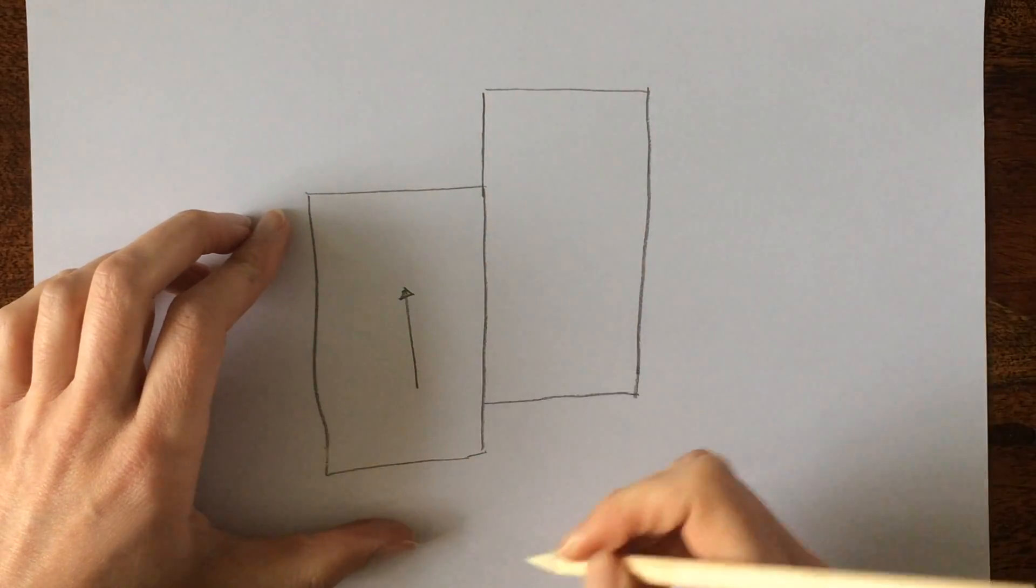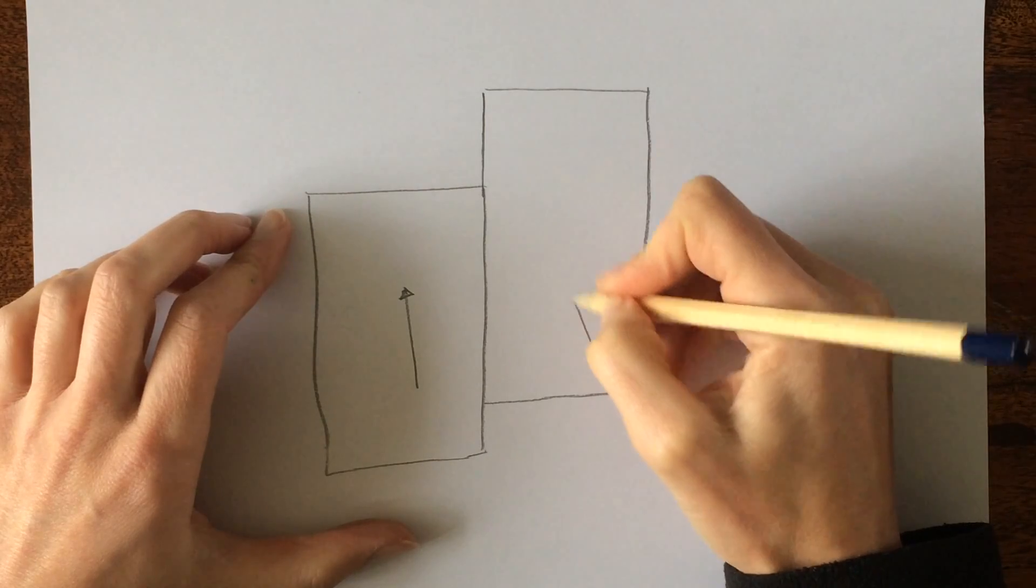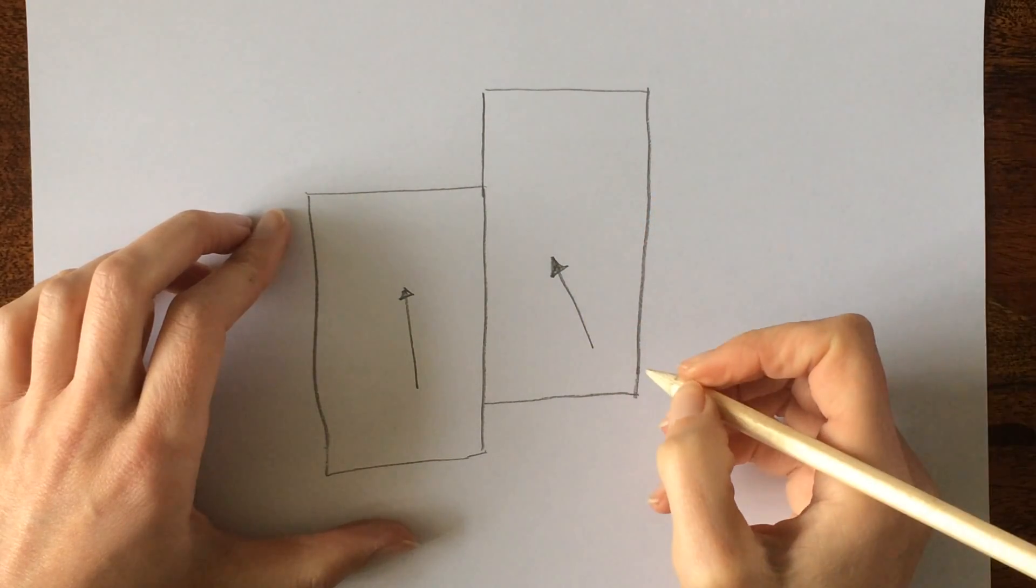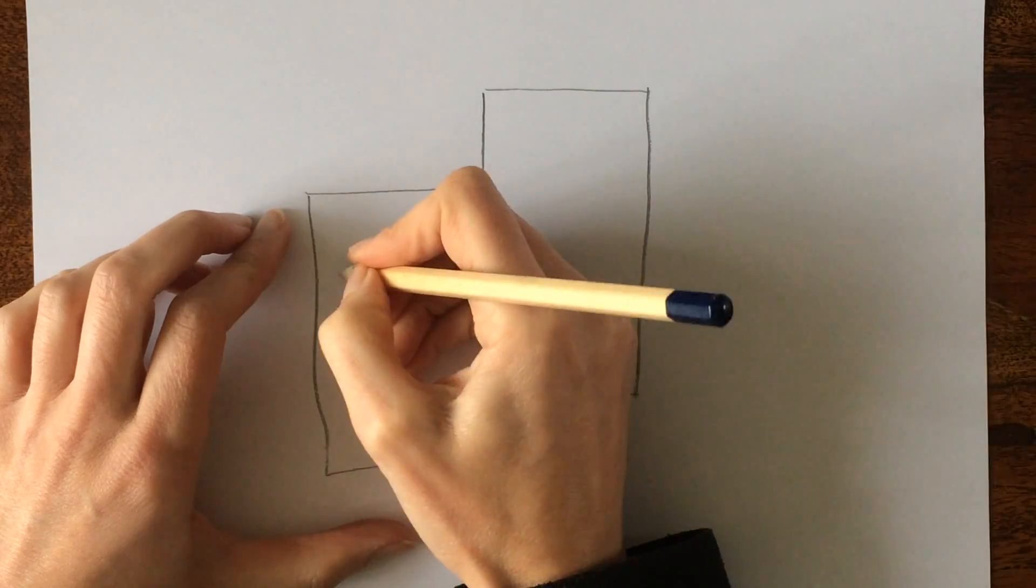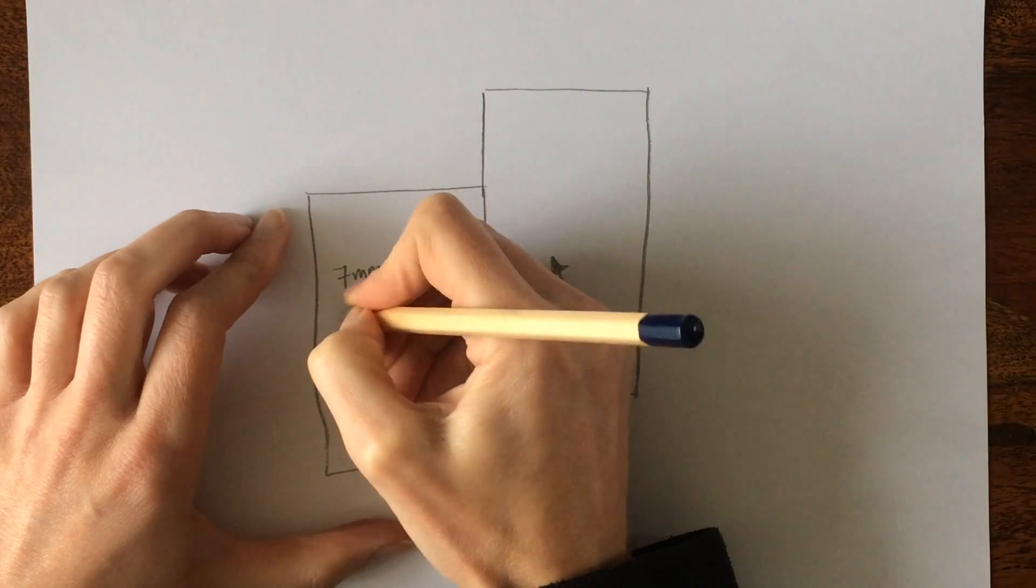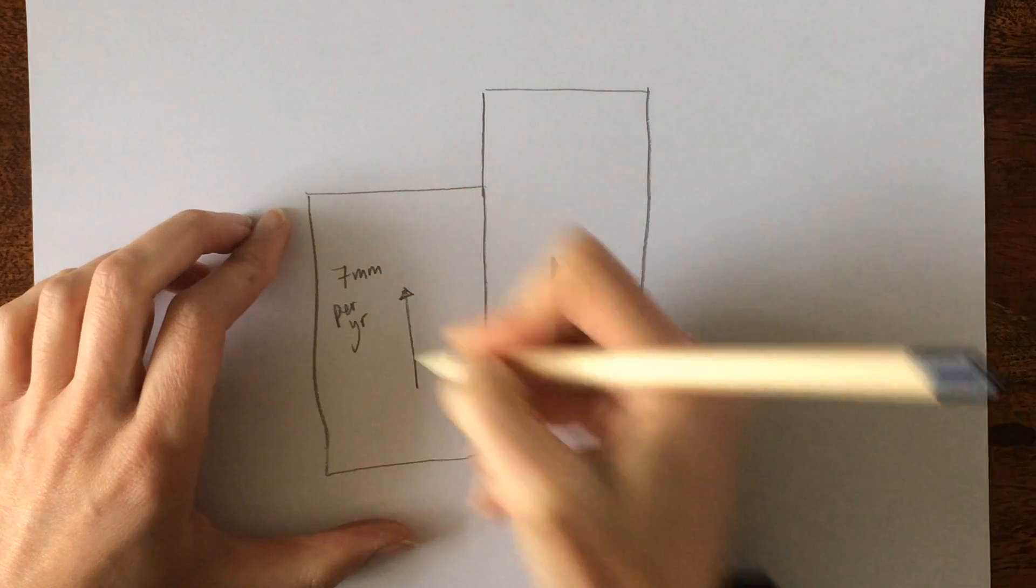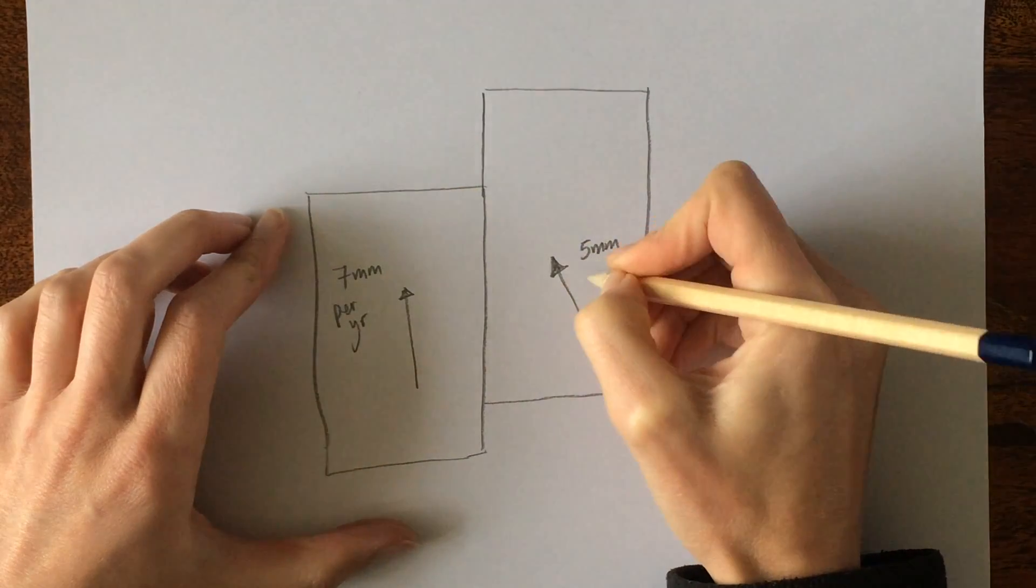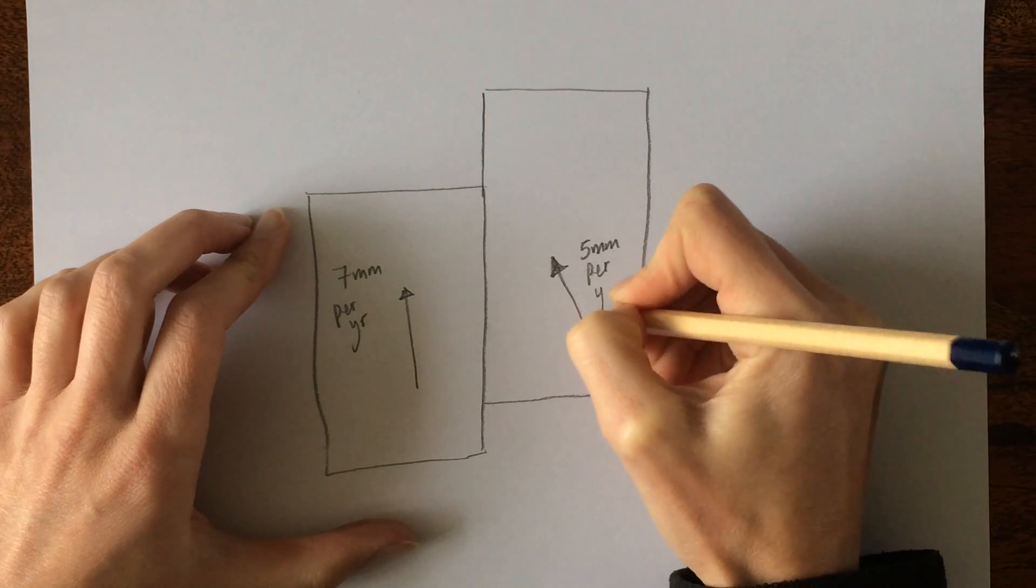We'll put an arrow to show that one's going in that direction and another arrow to show that one's going in the same direction. Only what we'll say is this one is traveling at seven millimeters per year and this one here is traveling slower at five millimeters per year.